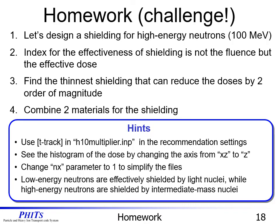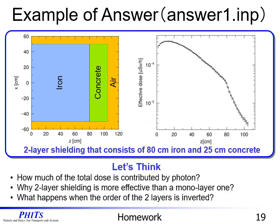Finally, we present a challenging homework. Let's design shielding for high-energy neutrons at 100 MeV. The index for the effectiveness of shielding is not the fluence but the effective dose. Find the thinnest shielding that can reduce the dose by 2 orders of magnitude. Combine two materials for the shielding. We show some hints for this homework — please try if you are interested. We show an example answer using answer1.inp. We will finish this exercise.